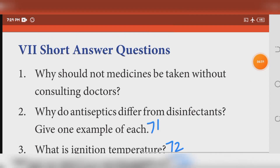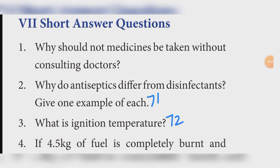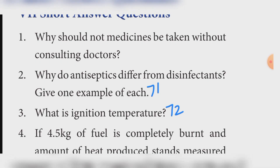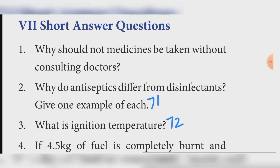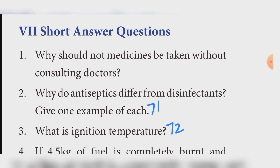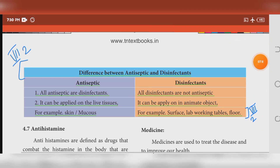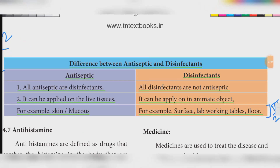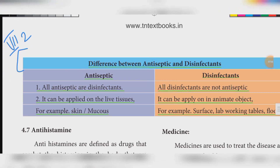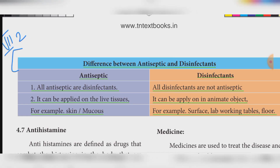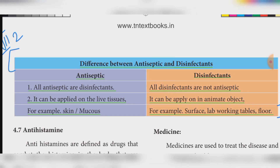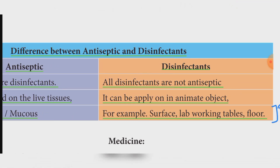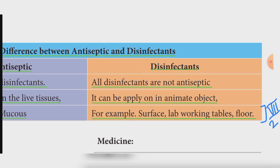Seventh section — Short answers. Second one: why do antiseptics differ from disinfectants? Give one example of each. Refer book page number 71. Antiseptics: all antiseptics are disinfectants; they can be applied on live tissues, for example skin or mucus. Disinfectants: all disinfectants are not antiseptics; they can be applied on inanimate objects, for example surfaces, lab working tables, and floors.